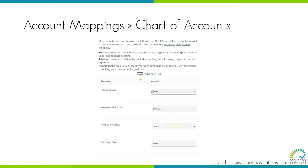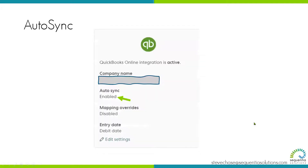For those of you that like to dive a little bit deeper, you can click on Advanced and you'll see more mappings — like, for example, vacation. It is set up to auto-sync by default. So if auto-sync is enabled, as soon as you run payroll in Gusto, it's going to push that data over into QuickBooks right away.